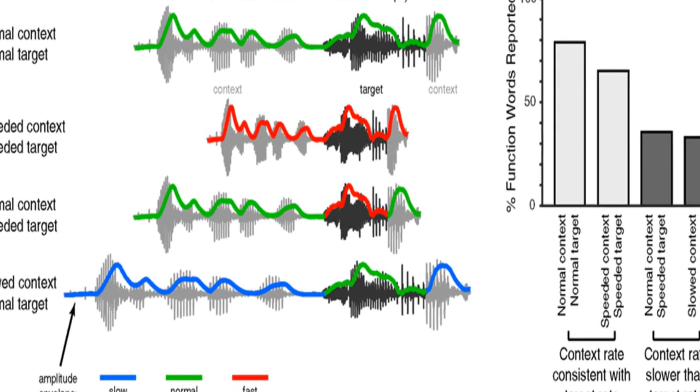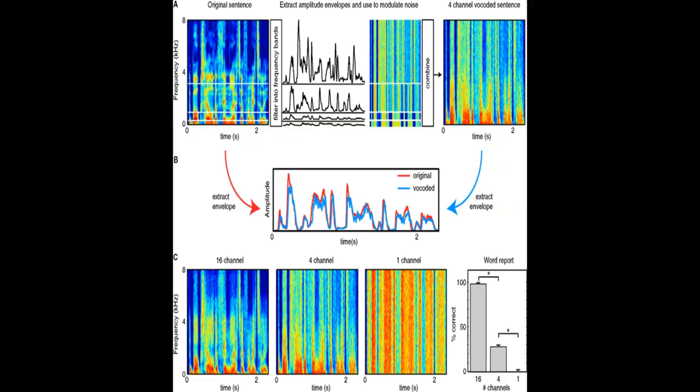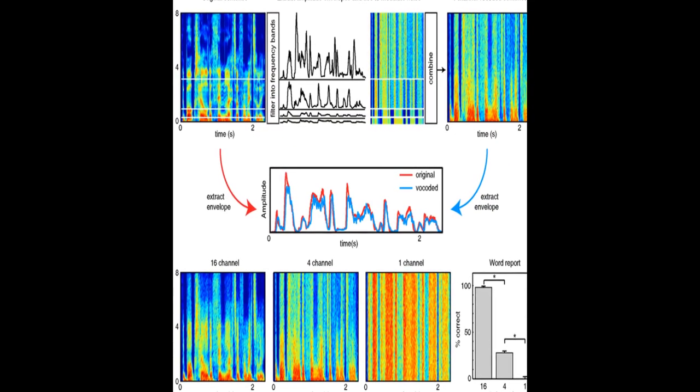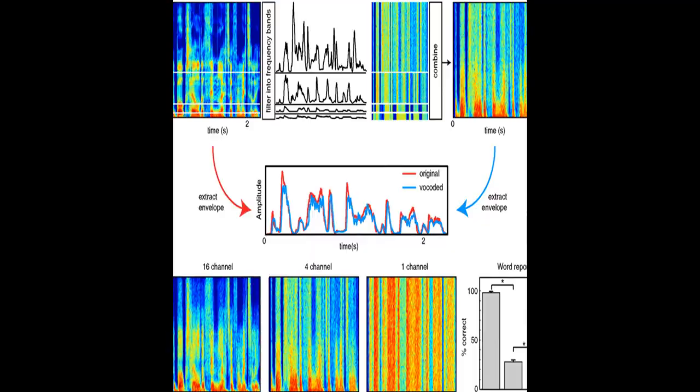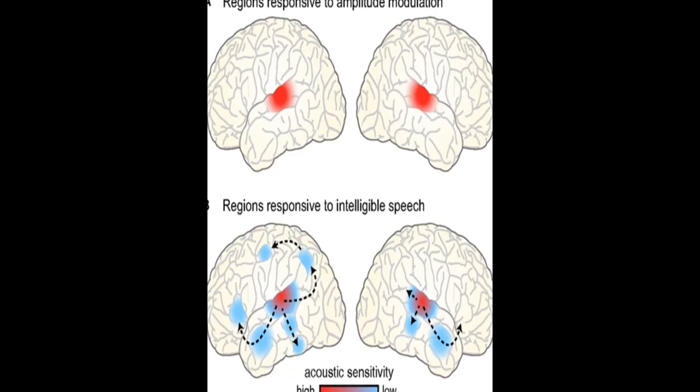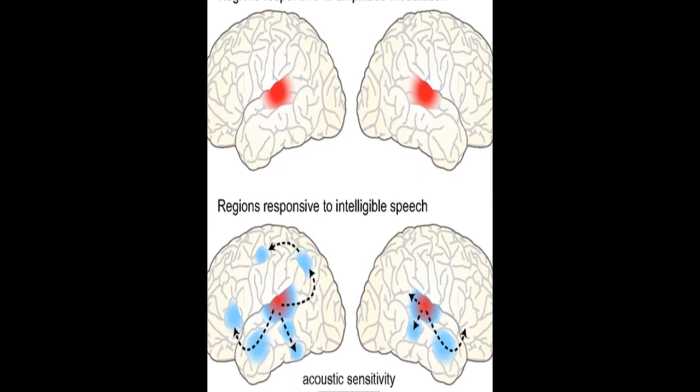It also proposes that lateral anterior temporal cortex functions in a domain-general fashion to support ongoing memory and integration of meaningful input, forming the foundation of a rhythmic hierarchy supporting spoken language.